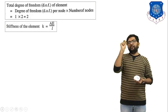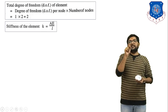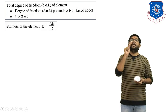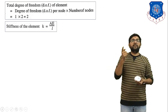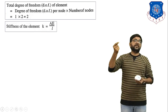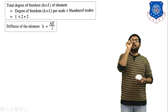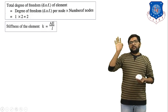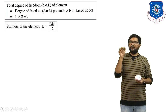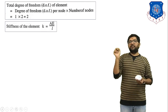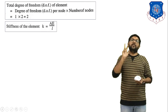Starting from stiffness equals force divided by deflection, we substitute the equation of stress: sigma equals force divided by area, so force equals sigma times area. This gives stiffness equals sigma times A divided by L. Substituting sigma equals E times epsilon, and then epsilon equals change in length divided by original length, the lengths cancel from numerator and denominator, giving the final stiffness equation: k equals AE upon L.